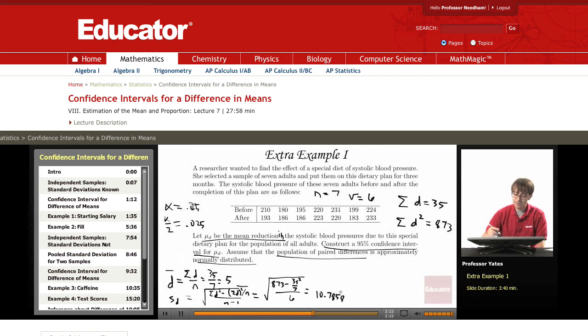Now we have everything for the confidence interval. I want d bar plus or minus t of 0.025 with 6 degrees of freedom times sd over the square root of n. With d bar is 5, I go down to 6 degrees of freedom and over to the column that has 0.025. That gives me 2.447 and I'm multiplying this by 10.7858 over the square root of 7. This gives me 5 plus or minus 9.9756.